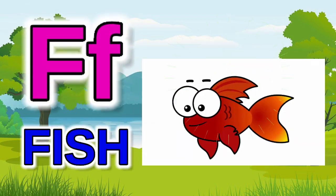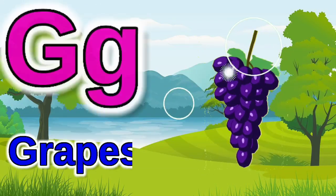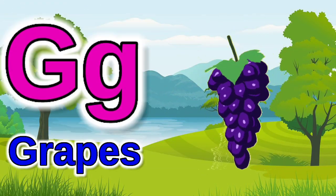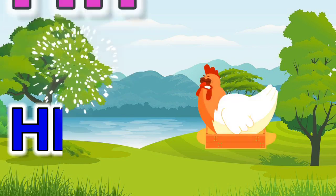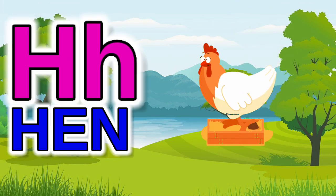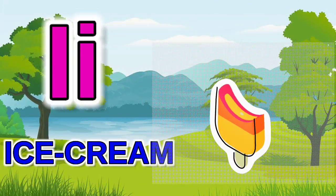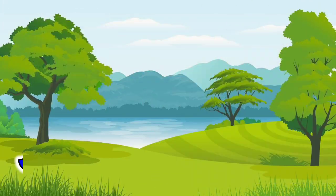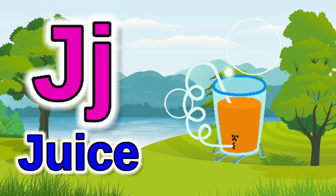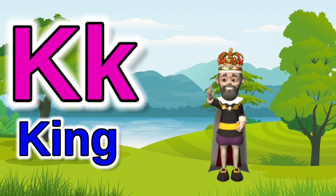F for fish, G for grapes, H for hen, I for ice cream, J for juice.